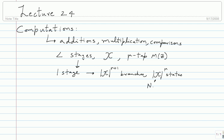We call |X|^μ the number of states, N_s. In rough terms, each branch metric requires about one multiplication, and as you run the Viterbi algorithm you need one addition per branch and one comparison per state. So roughly, the computation per stage is about three to four N_s operations. For the total computation, you multiply by L.